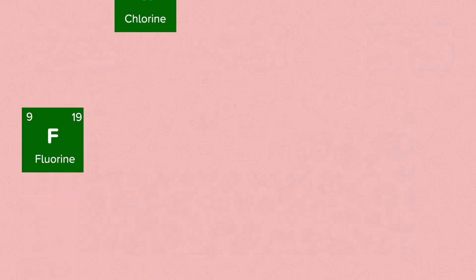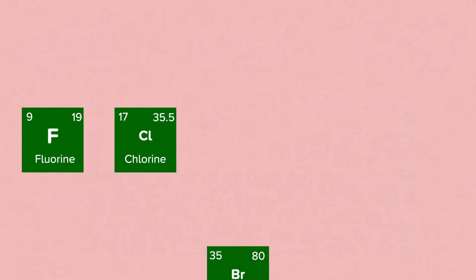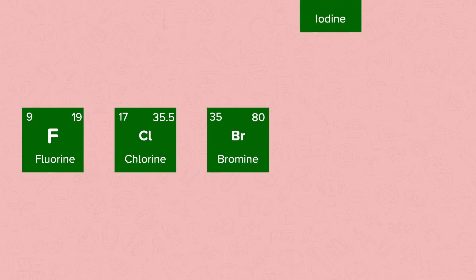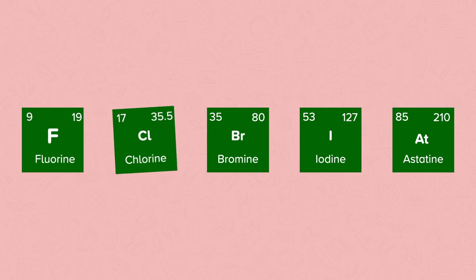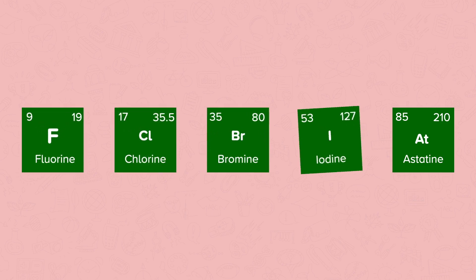The elements in Group 7 of the Periodic Table are called the halogens. The elements in Group 7 that you need to know about are the first four. These include fluorine, chlorine, bromine and iodine. Group 7 elements are all non-metals.